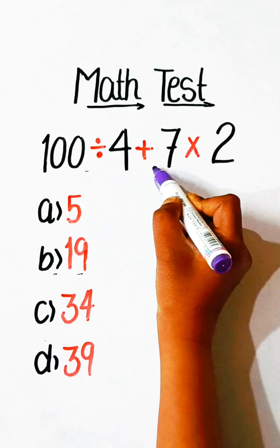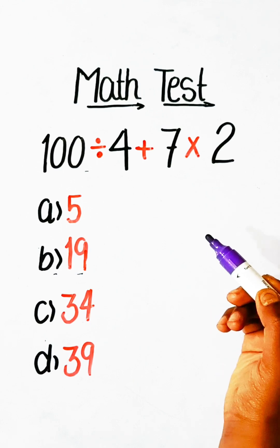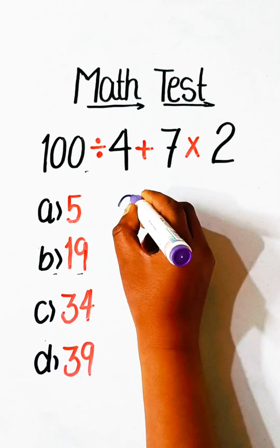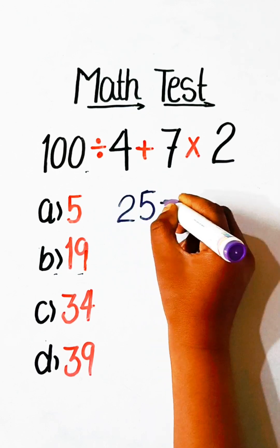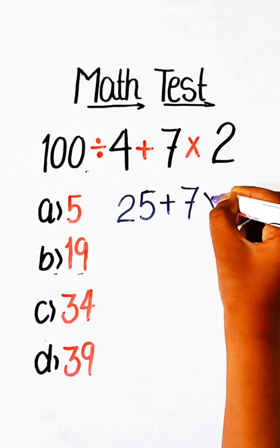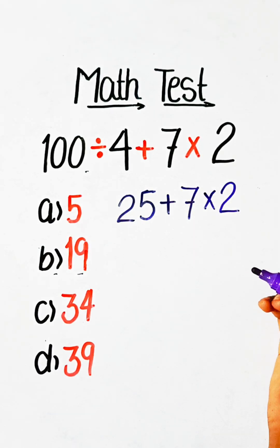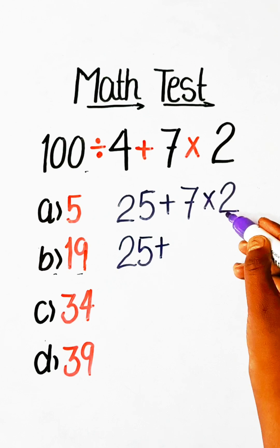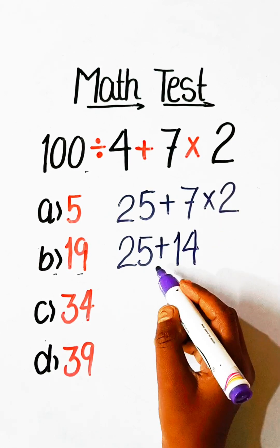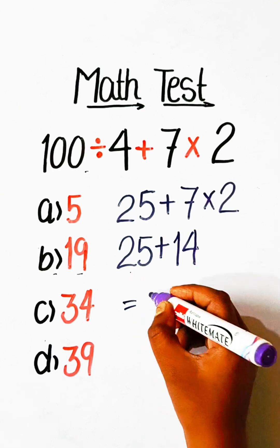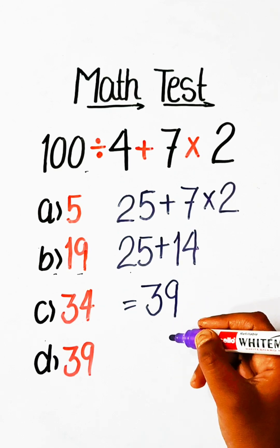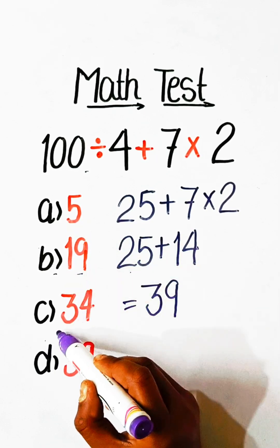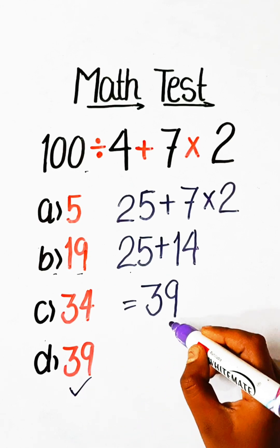In this expression we have division, plus, and multiplication. First we solve the division part: 100 divided by 4 is 25, plus 7 multiplied by 2. 7 twos are 14, so 25 plus 14 equals 39. It's so easy! In the options we have 5, 19, 34, and 39, so Option D: 39 will be our correct answer.